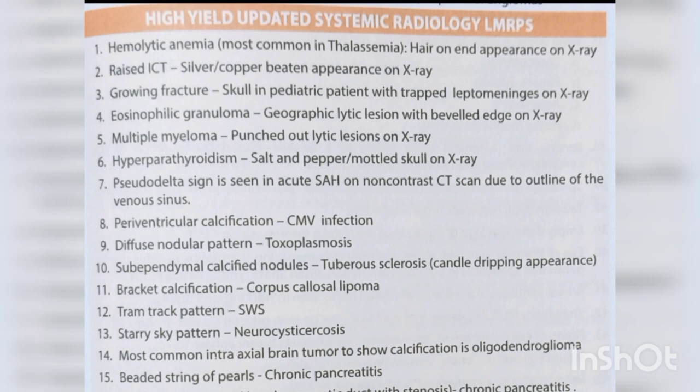Hemolytic anemia most common in thalassemia — hair-on-end appearance on X-ray. Raised ICT — silver or copper beaten appearance on X-ray. Growing fracture skull in pediatric patient with trapped leptomeninges on X-ray. Eosinophilic granuloma — geographic lytic lesion with beveled edge on X-ray.